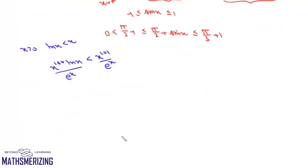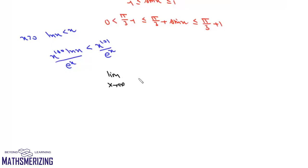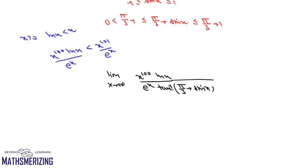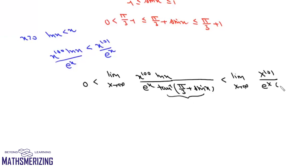Now we consider the limit as x tends to infinity of x^100 · log x divided by e^x · arctan(π/3 + sin x). Since the arctan term is a non-zero oscillating value c, the limit L satisfies 0 < L < limit as x→∞ of x^101 / (e^x · c). This is an infinity over infinity form, and differentiating the numerator 101 times gives limit x→∞ of 101! / e^x, multiplied by the same constant c.